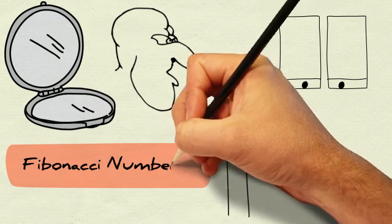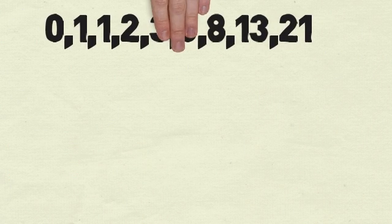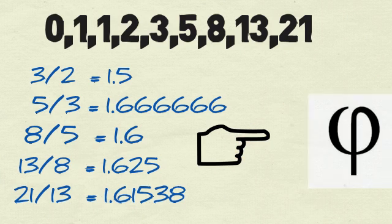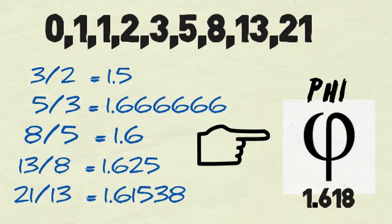Now if you divide two consecutive Fibonacci numbers, the result is pretty close to 1.618. In math, this number is represented by the Greek symbol phi and known as the golden ratio.